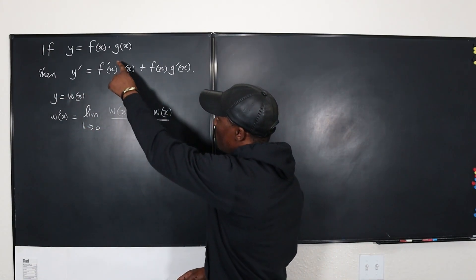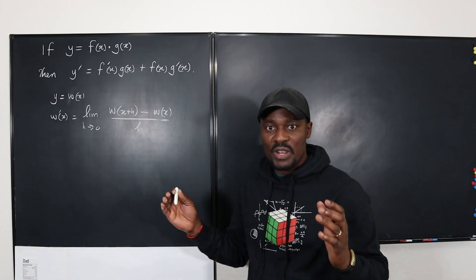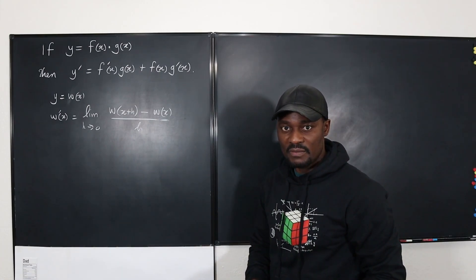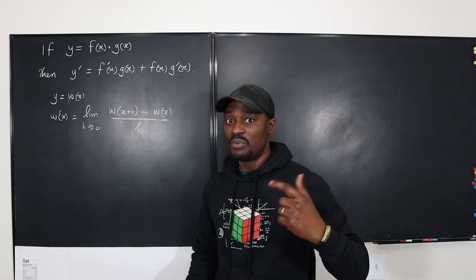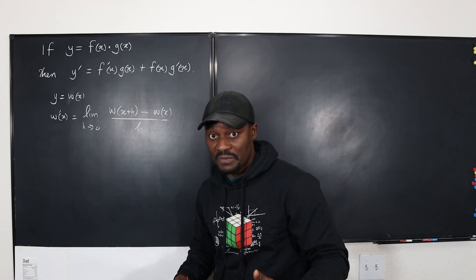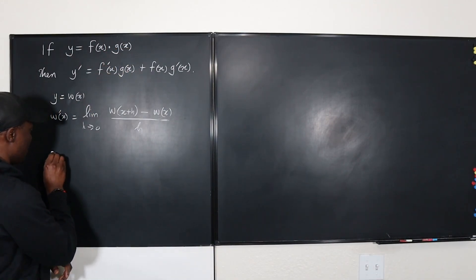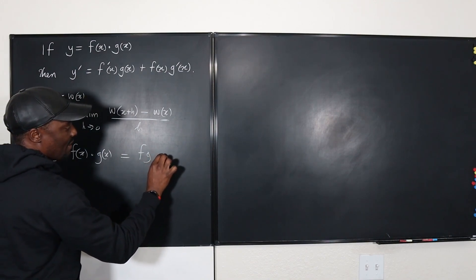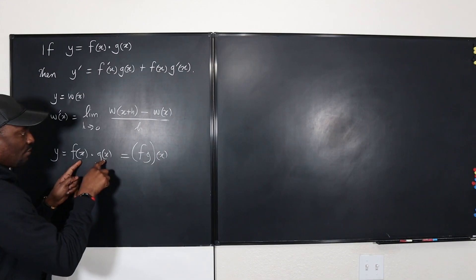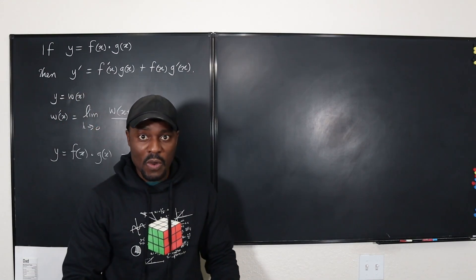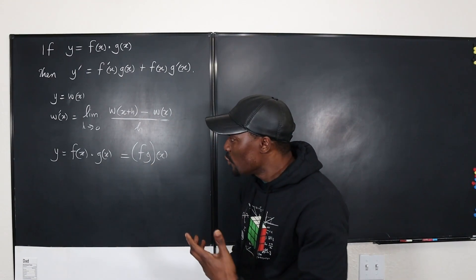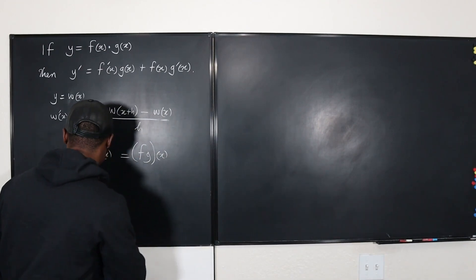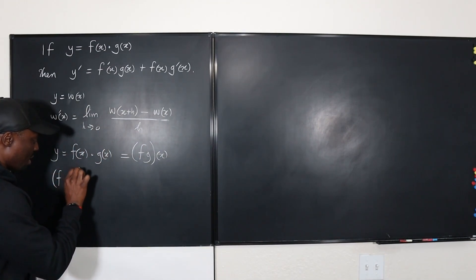You'll notice that what we end up with can never be the straightforward differentiate-then-multiply approach. We have to use the product rule because the product rule is what comes out of this definition. Now, if y is f of x multiplied by g of x, we can write this as fg of x. So the derivative of y is just the derivative of fg of x, and we can write it as fg prime of x.